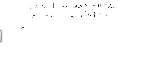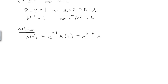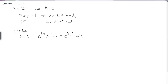The solution to this differential equation is just e to the 2t times the initial condition x evaluated at t-naught, which equals e to the lambda-1 t times the initial condition.